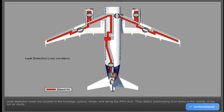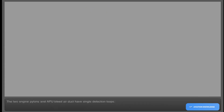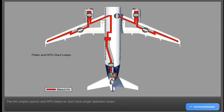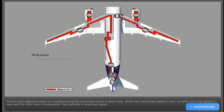The leak detection loops are located in the fuselage, pylons, wings, and along the APU duct. They detect overheating from leaks in the vicinity of the hot air ducts. The two engine pylons and APU bleed air duct have single detection loops. Double leak detection loops are installed along the pneumatic ducts in each wing.